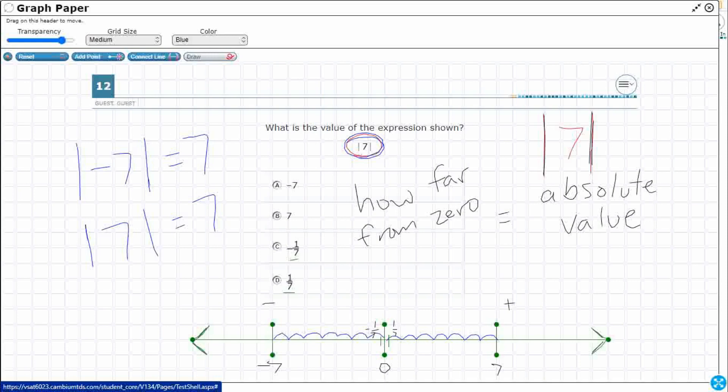Same with if you get these fractions. So negative 1/7, how far away is that going to be from 0? Well, that's going to be 1/7 away from 0. But what about absolute value of positive 1/7? Once again, it's just 1/7 away. So really what we're doing is we're just taking that negative away. We're looking to see how far away it is from 0.